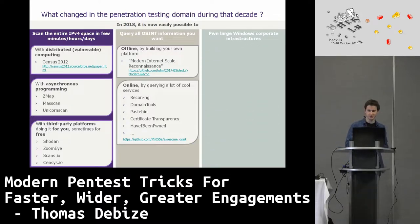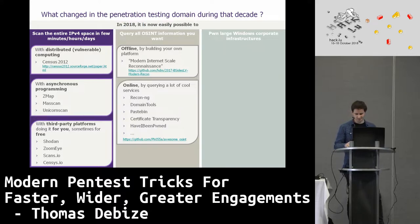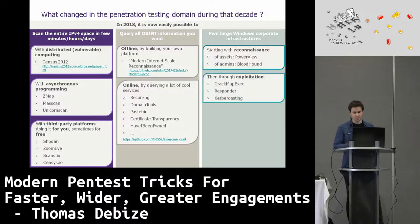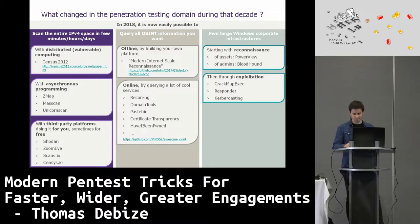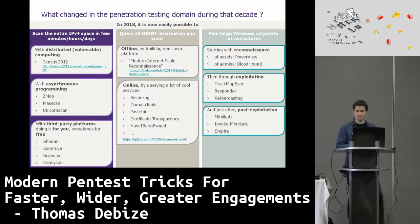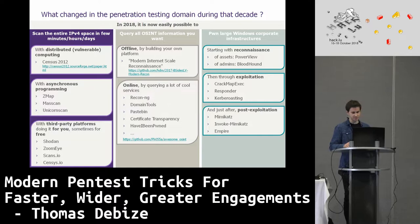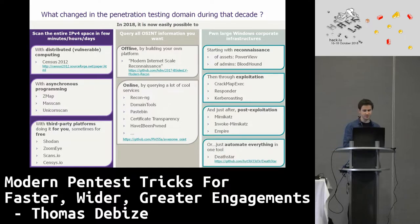Most interestingly, you can now pwn large Windows corporate infrastructures in really few minutes, few clicks, few commands. Starting with reconnaissance: PowerView, BloodHound to chase admins and assets. Then exploitation — CrackMapExec, Responder, and Kerberoasting, which is very useful. Then for post-exploitation: Mimikatz, Invoke-Mimikatz when you want to stay stealthy, or even Empire when you want to automate everything — just like Metasploit. Or you can automate every step with DeathStar, made by the guy behind CrackMapExec, byt3bl33d3r.